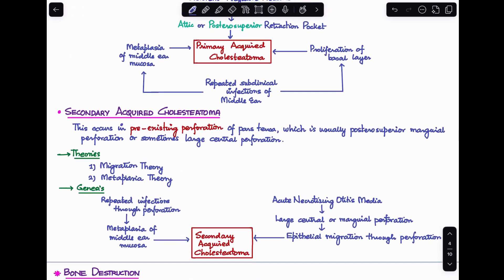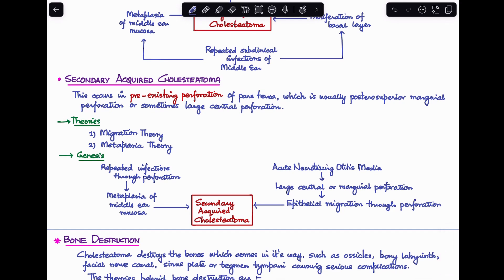Let's talk about secondary acquired cholesteatoma. This usually occurs in case of pre-existing perforation of pars tensa, which is usually posterior-superior marginal perforation, or sometimes a large central perforation. The theories are migration theory and metaplasia theory. If you look at the genesis, it can start from repeated infections through perforation leading to metaplasia of middle ear mucosa leading to cholesteatoma formation. Or it can start from acute necrotizing otitis media leading to development of a large central or marginal perforation, which leads to epithelial migration through the perforation, forming cholesteatoma. These are all the three different types of cholesteatoma you need to know about.